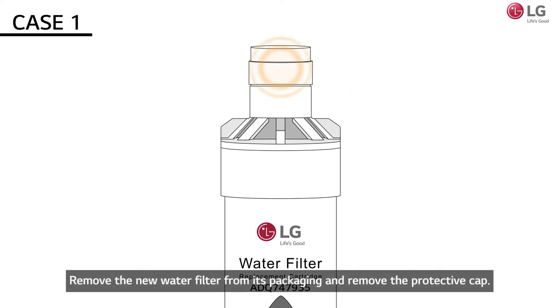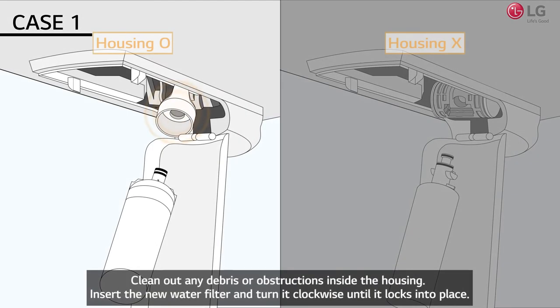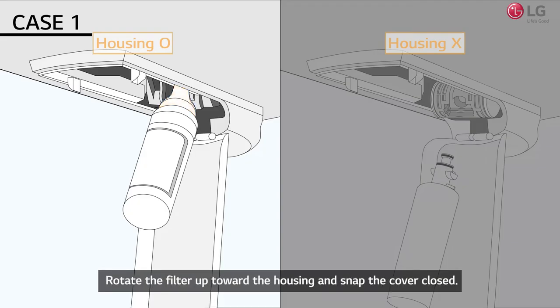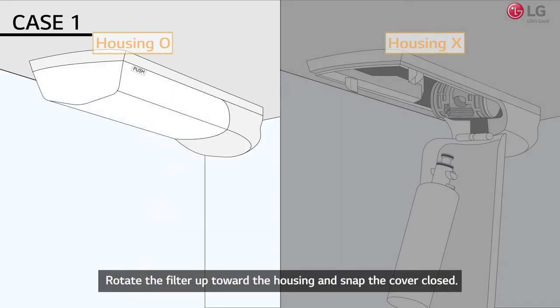Remove the new water filter from its packaging and remove the protective cap. Clean out any debris or obstructions inside the housing. Insert the new water filter and turn it clockwise until it locks into place. Rotate the filter up toward the housing and snap the cover closed.